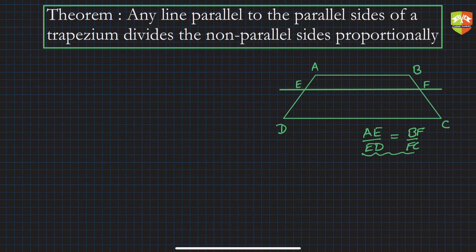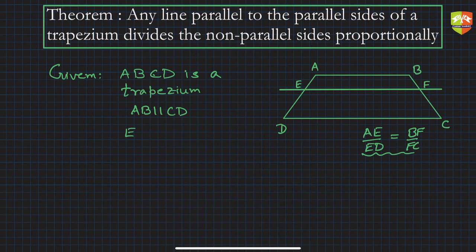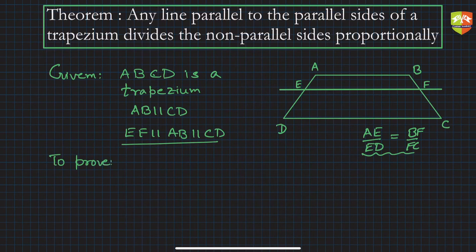Let's write down what is given. Given: ABCD is a trapezium where AB is parallel to CD. Also given: EF is parallel to AB, which is parallel to DC. To prove: AE upon ED is equal to BF by FC.